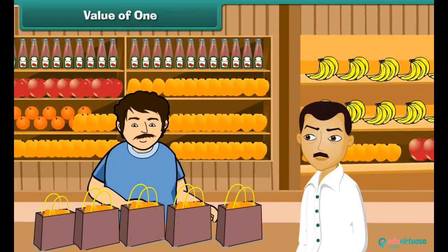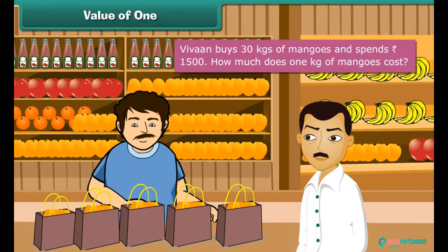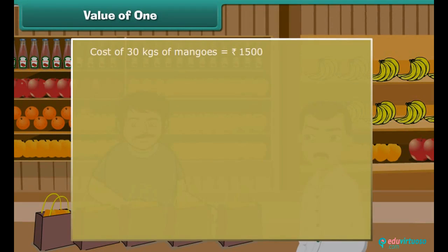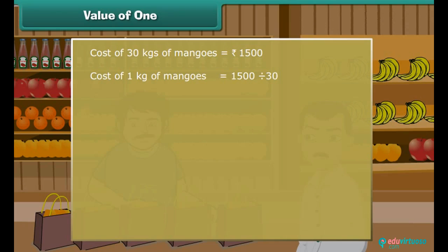Vivan buys 30 kgs of mangoes and spends 1,500 rupees. How much does 1 kg of mangoes cost? Cost of 30 kgs of mangoes is 1,500 rupees. Cost of 1 kg of mangoes is 1,500 divided by 30, that is 50 rupees. A kilogram of mangoes costs 50 rupees.